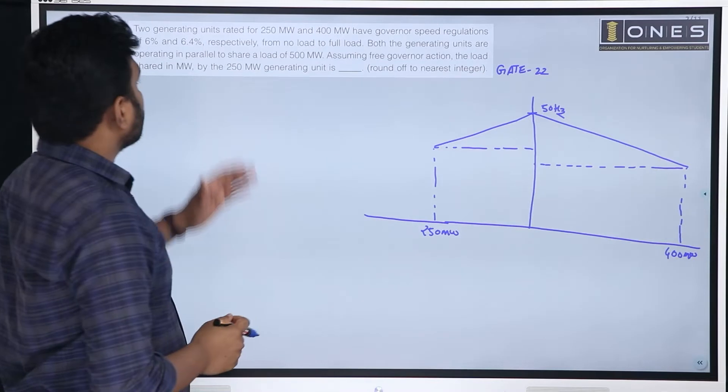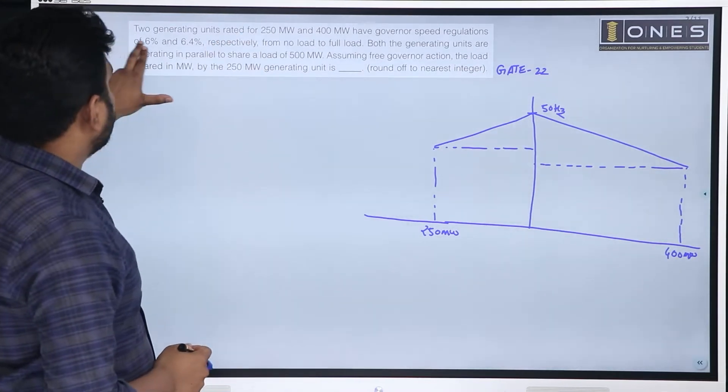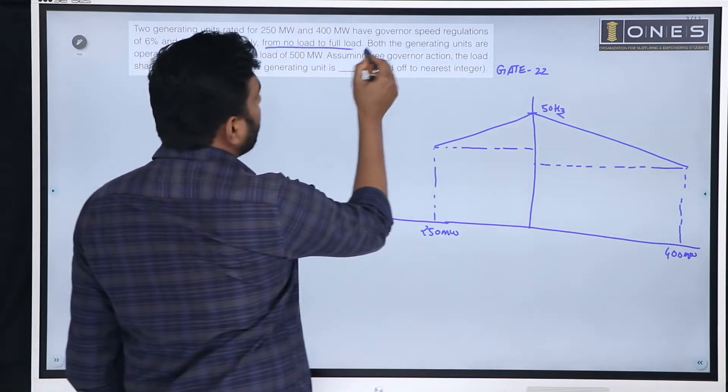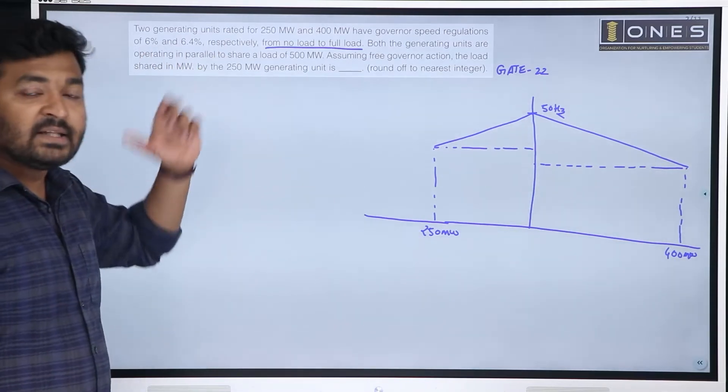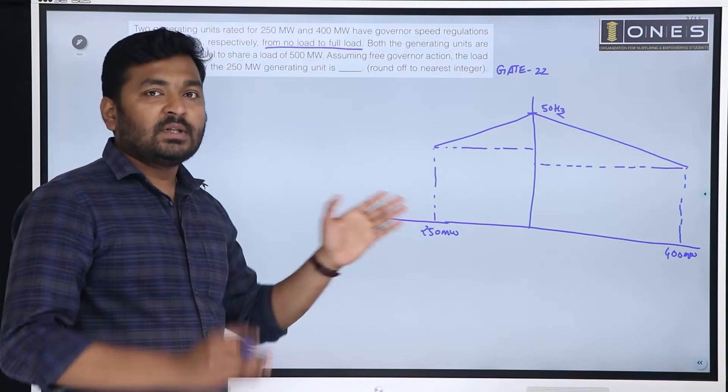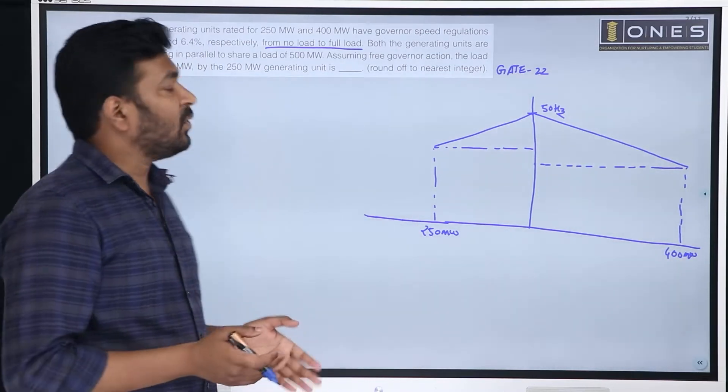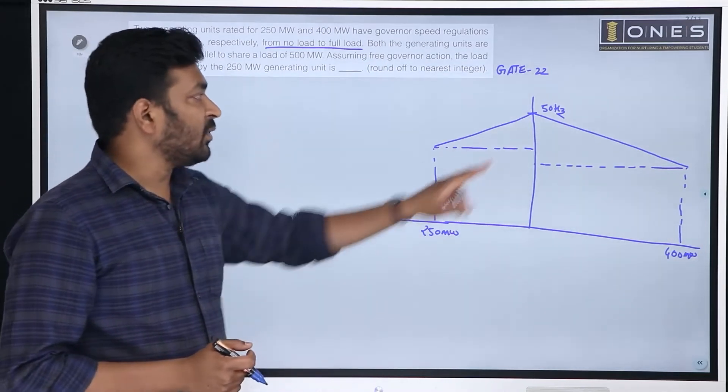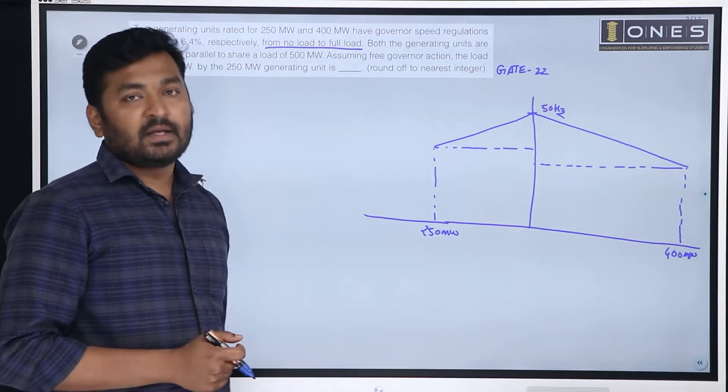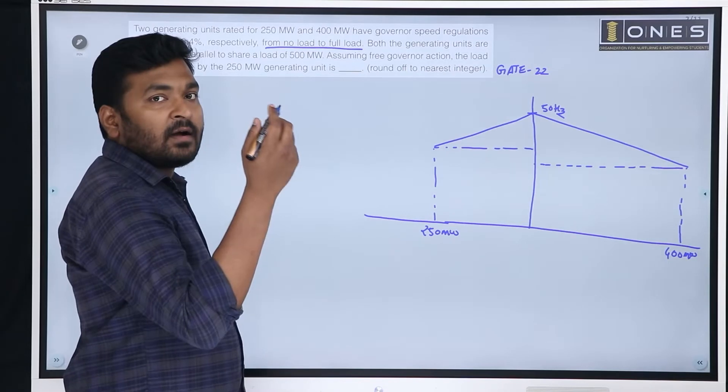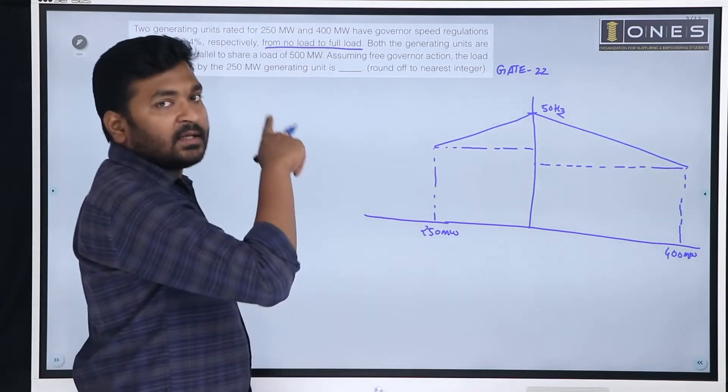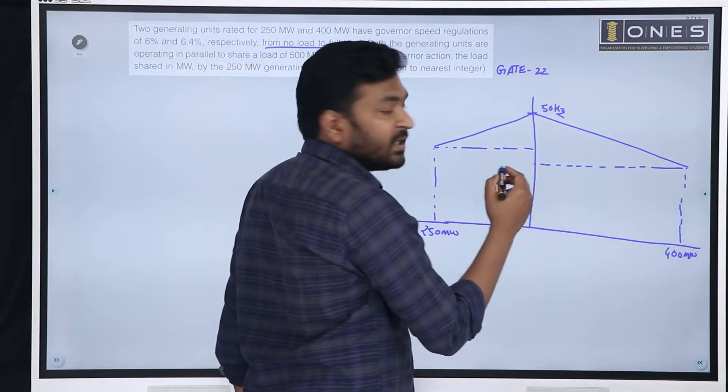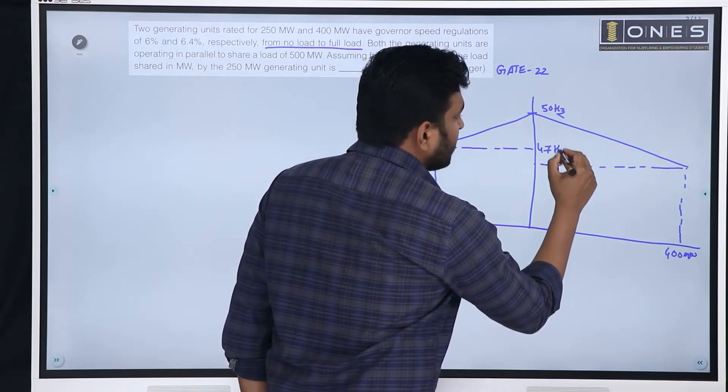Let us assume that 250 MW is the full load frequency. Speed regulation is 6% from no load to full load. This means the frequency will decrease by 6%. As we assume, the frequency is 3%. 50 minus 3, it will be 47 hertz.